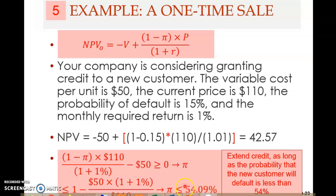If the customer's probability of default is 55%, for example, you should not extend credit — sell on a cash basis instead. The break-even probability of default is useful to determine whether to grant credit. If the chance of defaulting is about 30%, you should grant credit because it's below 54%. But if there's a 60% chance the customer won't pay, you should not provide credit, because the net present value will be negative.